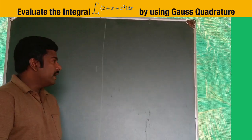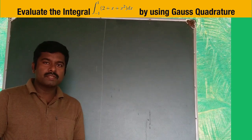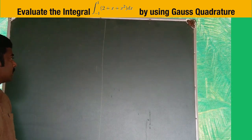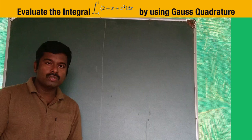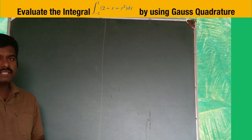Hello everyone, today we are going to solve Gauss quadrature formula problems. Evaluate the integral from -1 to 1 of (2 + x + x²)dx using Gauss quadrature formula.